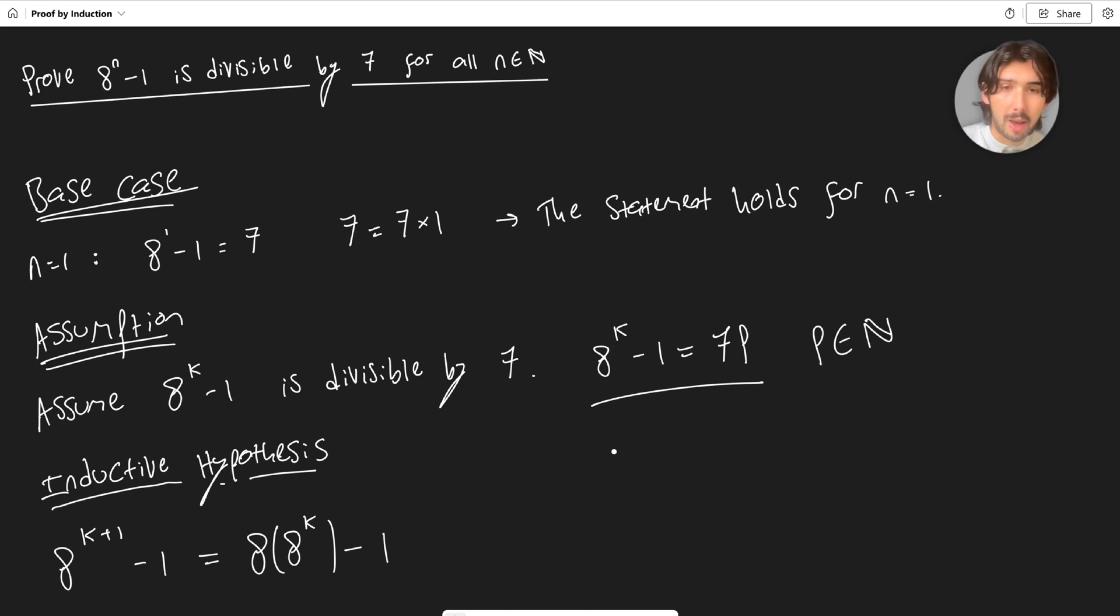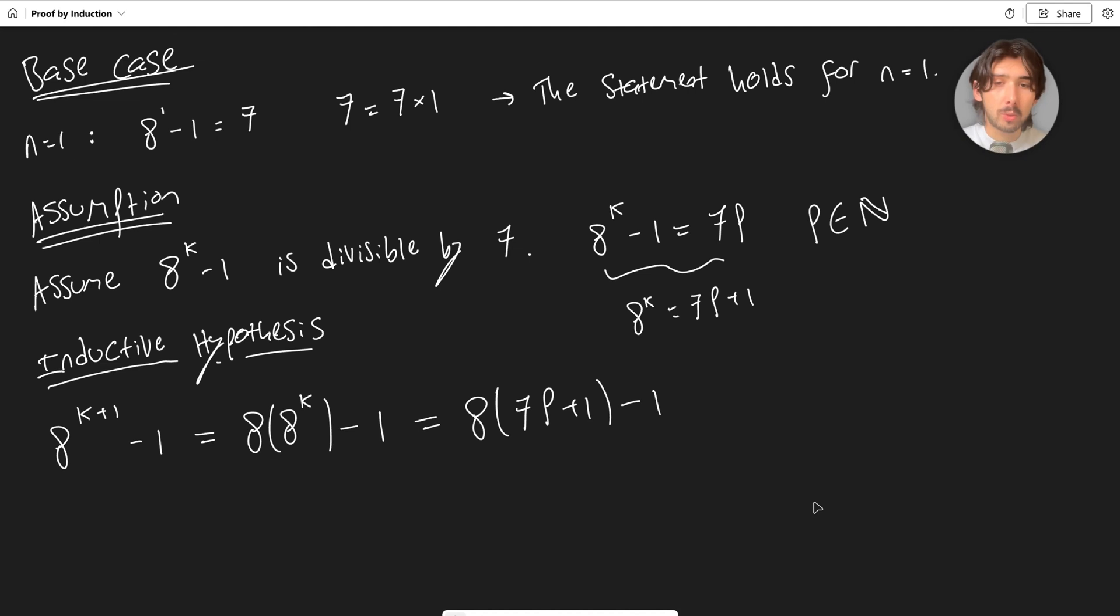I'm looking at the assumption because we're going to want to use it somehow. I've kind of got 8 to the k there, so I can rewrite this as 8 to the k equals 7p plus 1, that's the assumption rearranged. So I can say that this is equal to 8 times (7p plus 1) minus 1. I've simply replaced 8 to the k with 7p plus 1, because if 8 to the k minus 1 is divisible by 7, then 8 to the k can be written as 7 times some number plus 1.